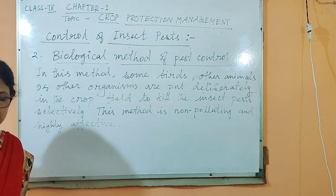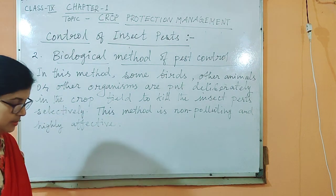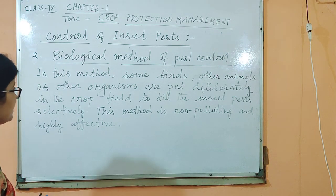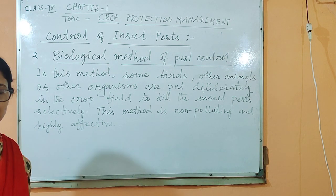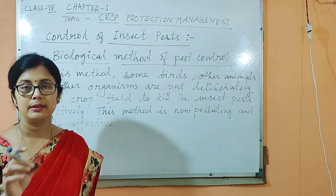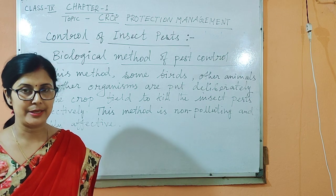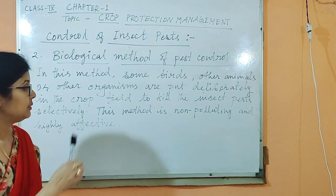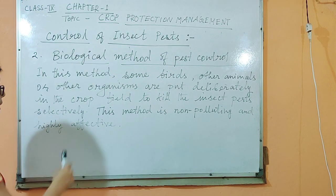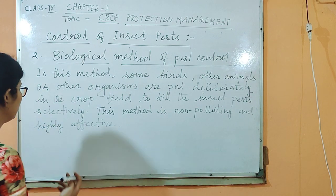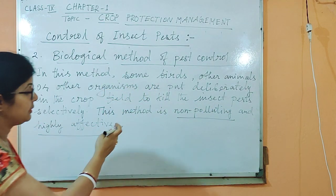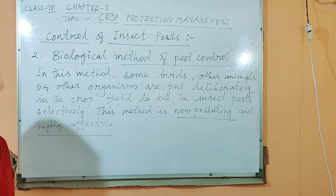Biological control: we can use particular birds or animals which feed on particular insect pests and kill them in the field. Therefore, this is a non-polluting method and a highly effective method. They kill the insect pests selectively in the field.